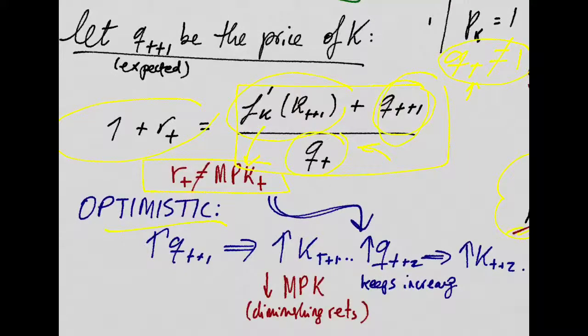So the way that this capital gains mechanism works is, imagine that you suddenly become really optimistic about the price of capital in the future. You think it's going to go up by a lot in the future, so you really want to invest in capital because you're going to make tons of money in the future. So you invest a lot of savings into capital. And usually the MPK would go down in the next period, so you want to invest less and go back to where you were before, right?